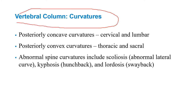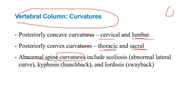The vertebral column has curves. An abnormal spinal curve is a curvature. The normal cervical lordosis, lumbar lordosis, thoracic kyphosis, and sacral kyphosis are not curvatures — they're just normal curves. A curvature refers to scoliosis, where instead of being straight from front to back, the spine deviates to the side.